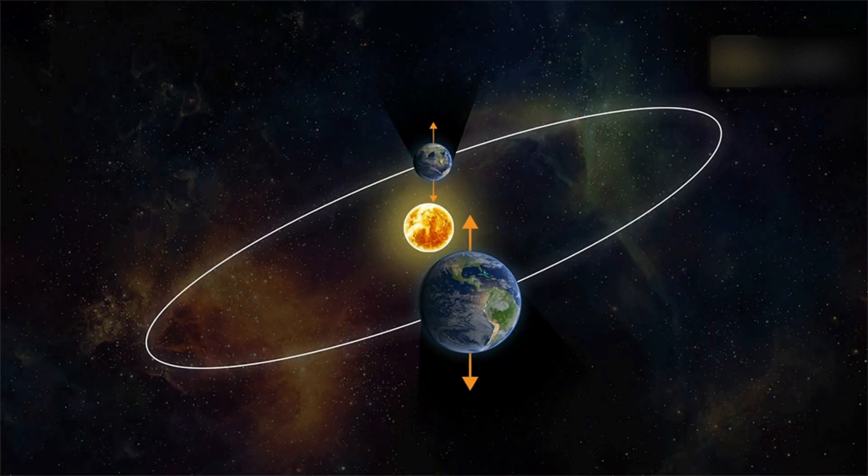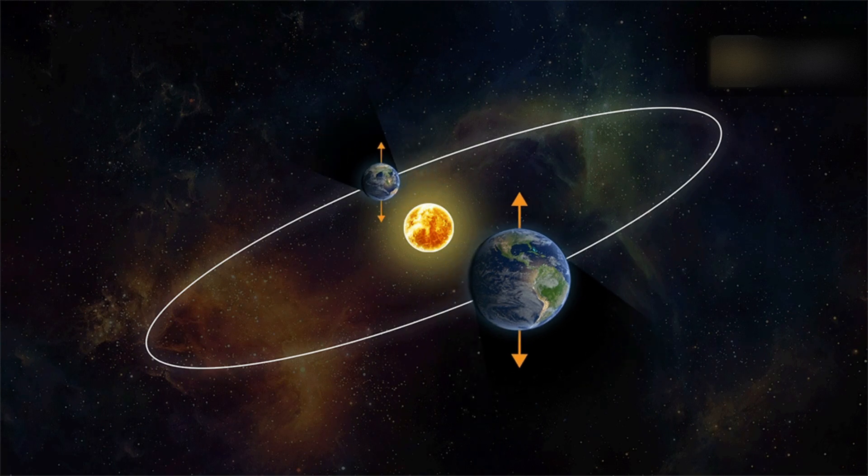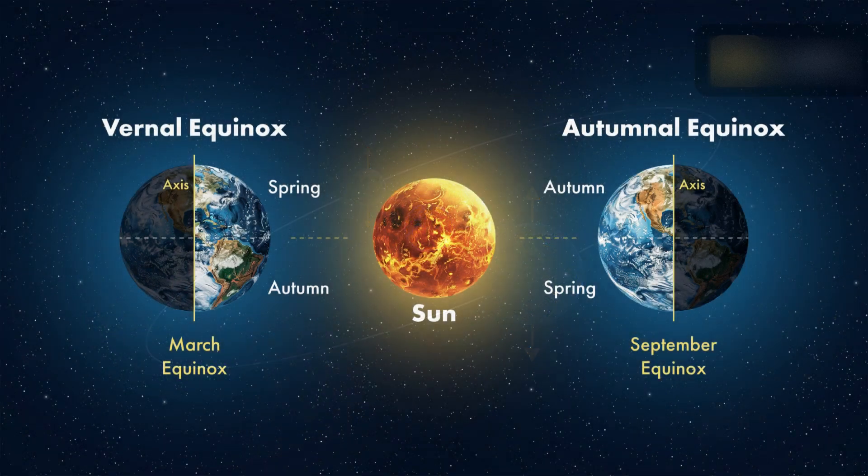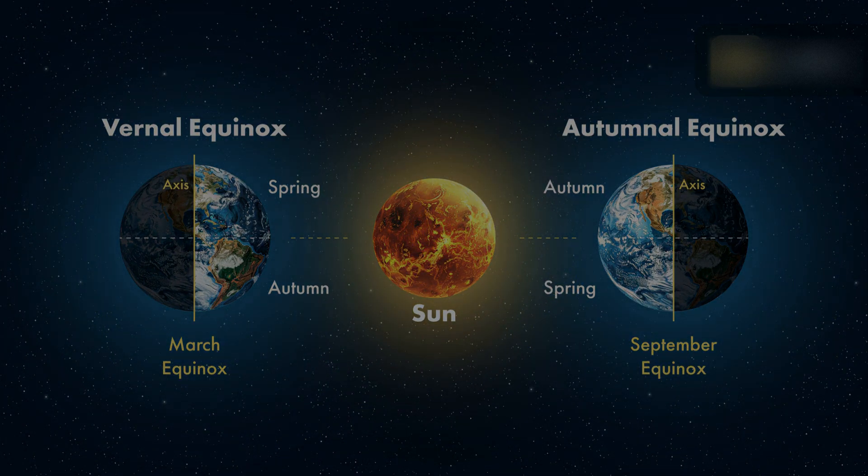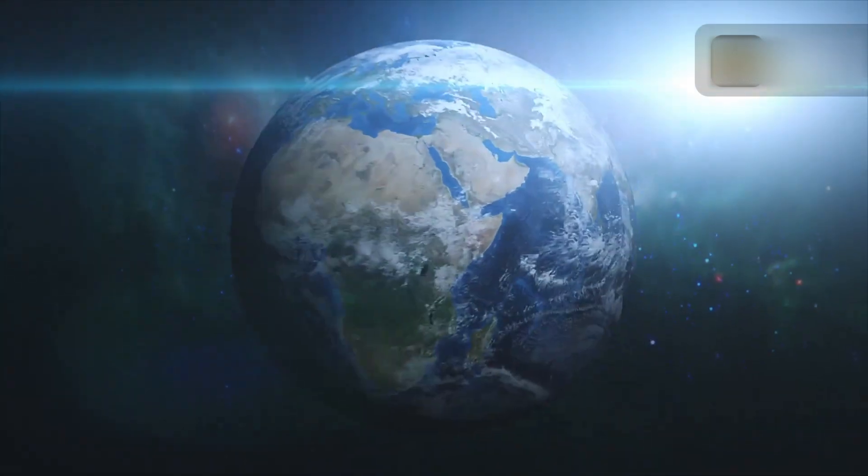The equinox may be taken to mark the end of astronomical summer and the beginning of astronomical autumn (autumnal equinox) in the Northern Hemisphere, while marking the end of astronomical winter and the start of astronomical spring (vernal equinox) in the Southern Hemisphere.